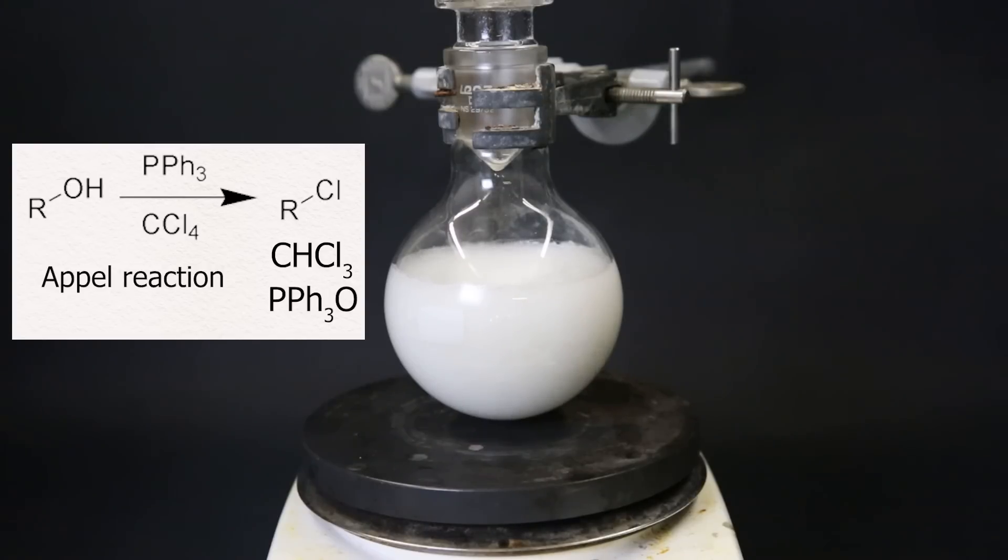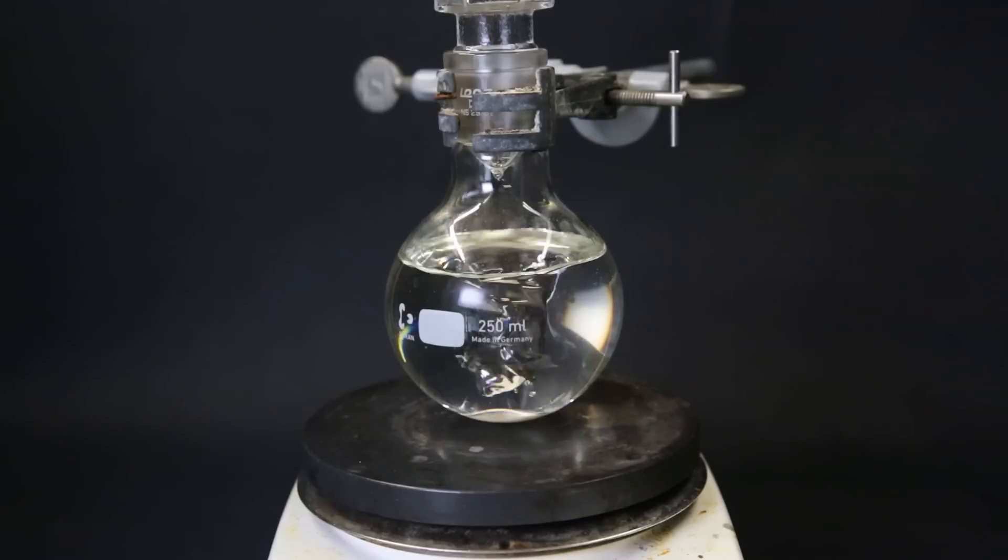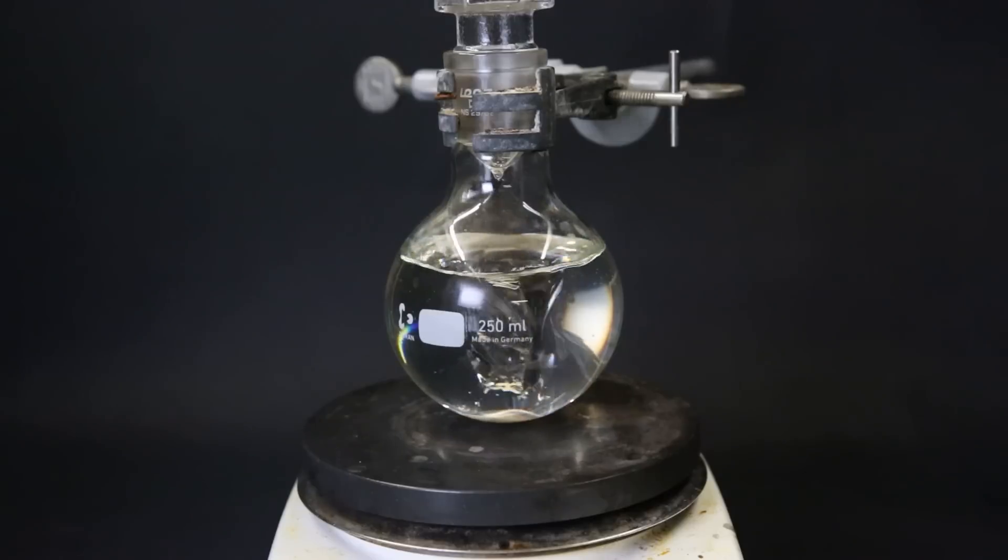In this reaction, the carbon tetrachloride will donate the chlorine atom and take up a hydrogen to become chloroform, while the triphenylphosphine takes up the oxygen atom to become triphenylphosphine oxide. In general, we can expect a near 100% conversion from this type of reaction. As the reaction progressed, it suddenly turned clear, so all of the triphenylphosphine had melted or dissolved.